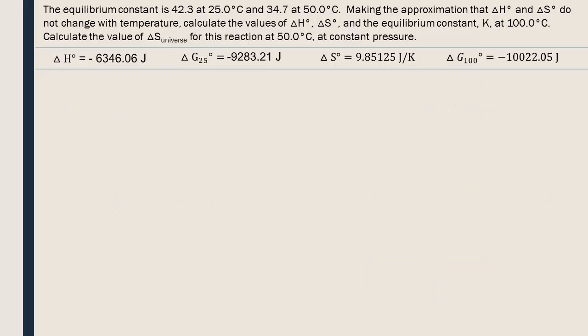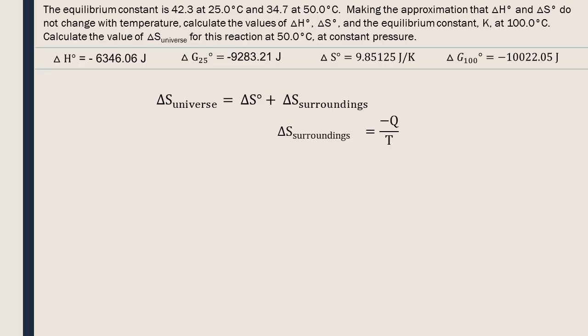Now for the last part of the question. The value of delta S universe at 50 degrees Celsius will be the sum of the standard entropy variation and the entropy variation of the surroundings. We have to build this equation from the data on our formula sheet. We already calculated standard delta S, but not delta S of the surroundings. We know that at constant temperature, the entropy variation equals Q divided by the temperature. For the surroundings, it will be the inverse of the Q of the reaction — because the environment absorbs what the reaction releases — so we add a negative sign. At constant pressure, Q is equal to the enthalpy variation, a value that we already know.